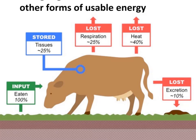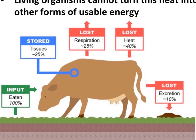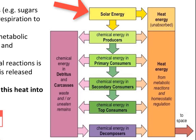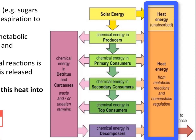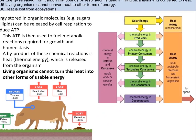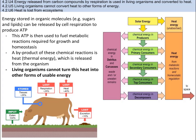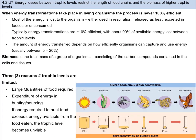Looking at the cow example: the inputs represent 100%. Of that, 25% is stored in the cow, 25% is used during cellular respiration to make ATP, 40% is lost as heat, and 10% is lost as waste products or fecal matter. In the other diagram, all input from solar energy is transferred to chemical energy in producers, and at each level — from producers to top carnivores and decomposers — energy is lost in the form of heat. That heat goes only to the atmosphere and space; living organisms cannot turn heat into other forms of usable energy. Unlike nutrients, which are recycled, this heat is lost from the ecosystem — hence ecosystems require a continuous influx of energy from an external source such as the sun.